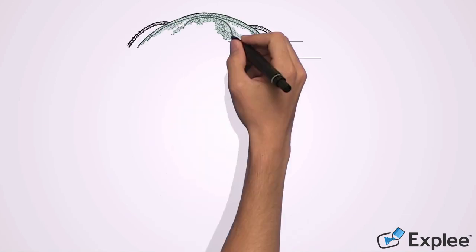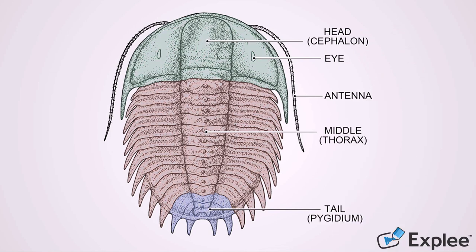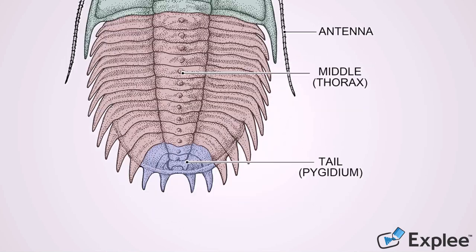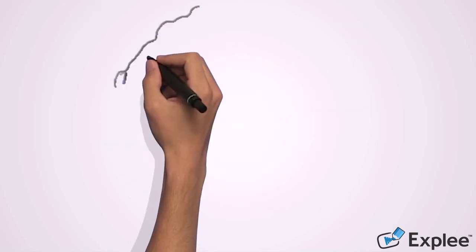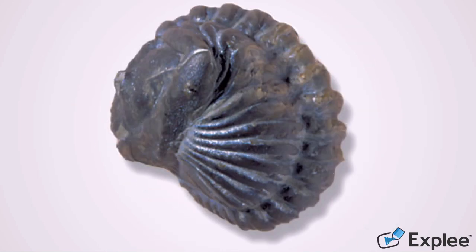Here we have a typical image of a trilobite. The body is composed of three major segments: the cephalon, the thorax, and the pygidium. What's interesting is that their thorax allows them to enroll into a condensed ball formation, which is an interesting defensive mechanism adopted by these creatures.